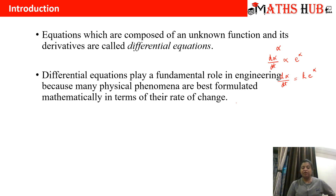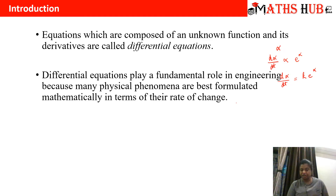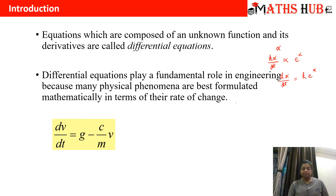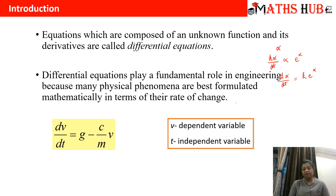Differential equations play a very fundamental role in engineering because many physical phenomena are best formulated mathematically in terms of their rate of change. For example, the differential equation dv/dt = g - (c/m)v: here v is the velocity, so dv/dt means the acceleration. g is the acceleration due to gravity, c/m is a constant where m is the mass of the body, and v is the velocity. So v is the dependent variable depending on t, which is the independent variable.